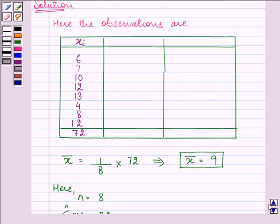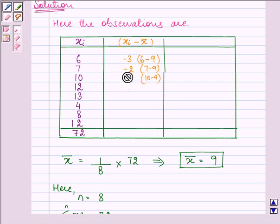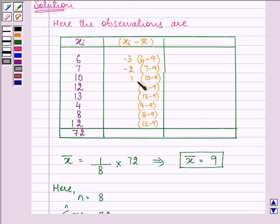Now, to calculate the variance, firstly, we need to subtract the mean from xi. Now here, we have 9, so we need to subtract from each observation 9. And we have the answer as minus 3, minus 2, then 10 minus 9 gives us plus 1. Then we have further as, first we had minus 3, minus 2, 1, 3, 4, minus 5, minus 1, then 3.